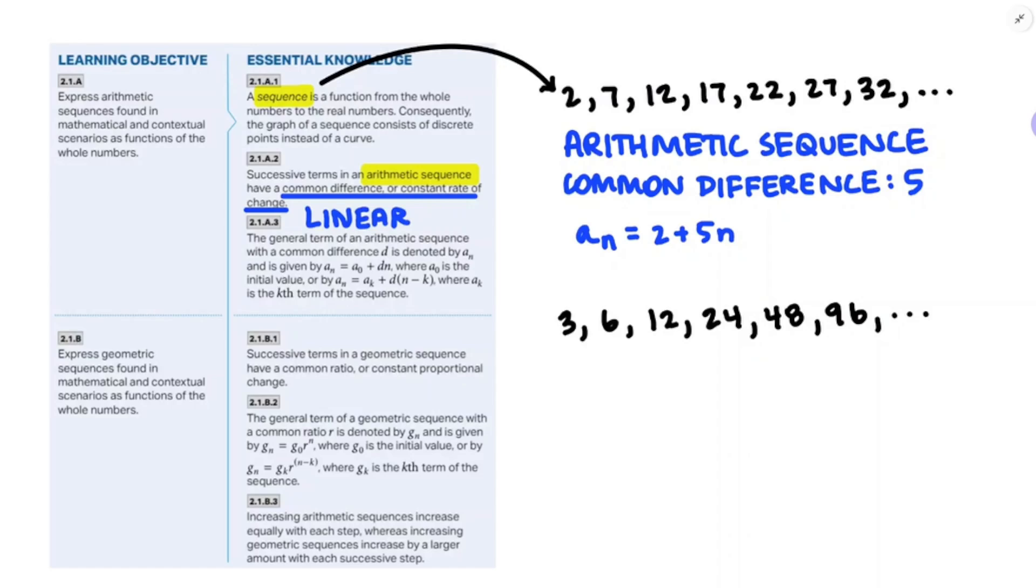But I'm going to point out that without any other context, it's important to note that we're assuming that that first term, that 2 up there, that's the zeroth term that corresponds to n equals 0. And that's alright, unless we have contradictory information that says we need to start, that 2 is the n equals 1 term.